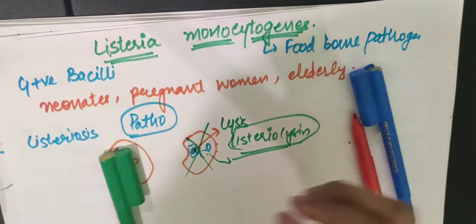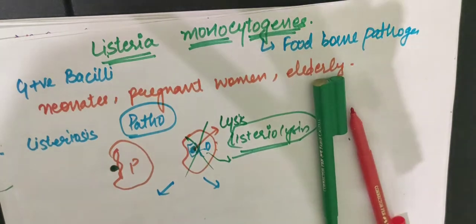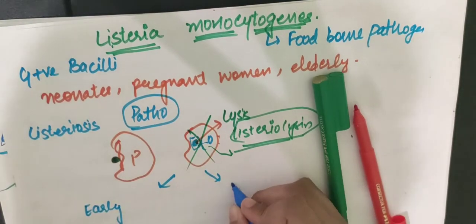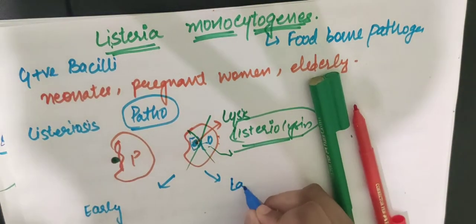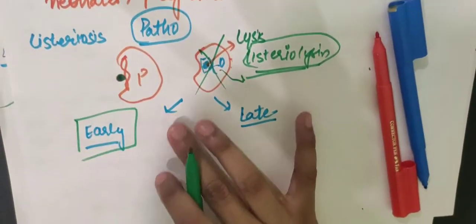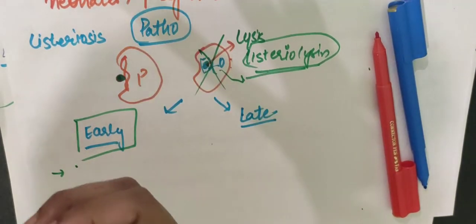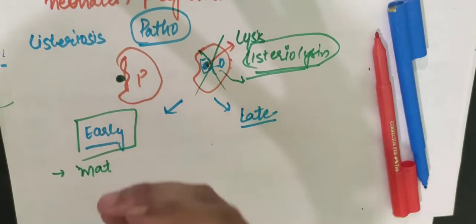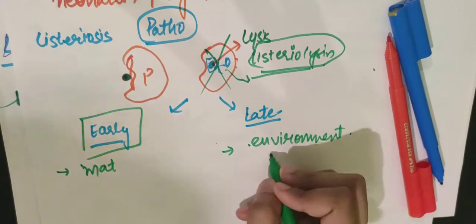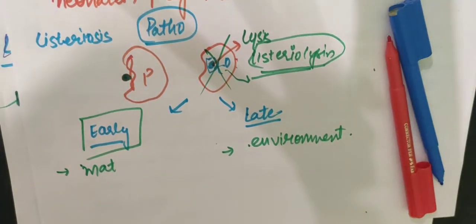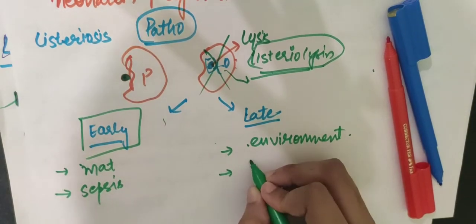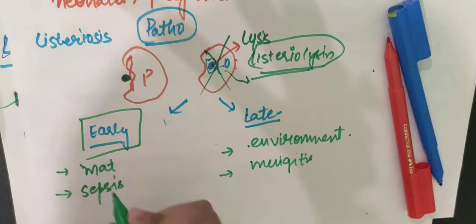In neonates, there are two types of disease. If it occurs within 5 days of birth, it is early onset disease, acquired from the maternal genital flora. If it occurs after 5 to 6 days, it is late onset disease, acquired from the environment. Early onset commonly presents as sepsis, and late onset commonly presents as neonatal meningitis.